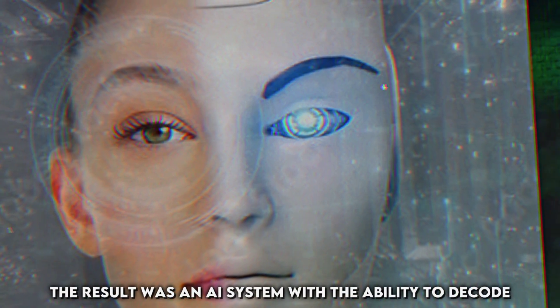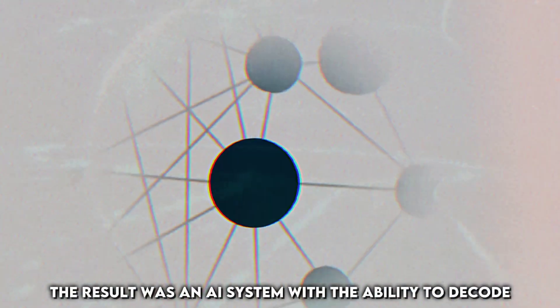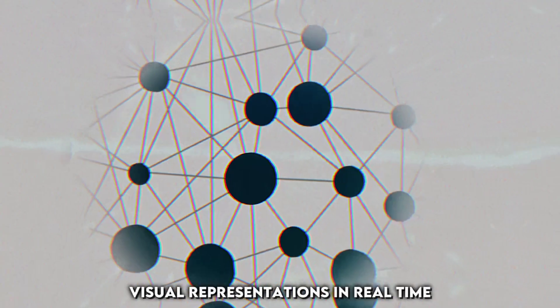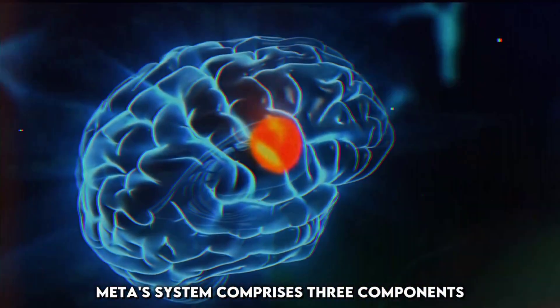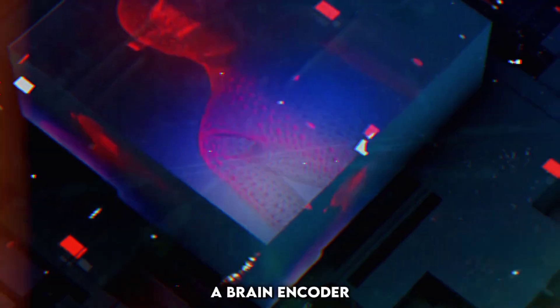The result was an AI system with the ability to decode visual representations in real time. Meta's system comprises three components: an image encoder, a brain encoder, and an image decoder.